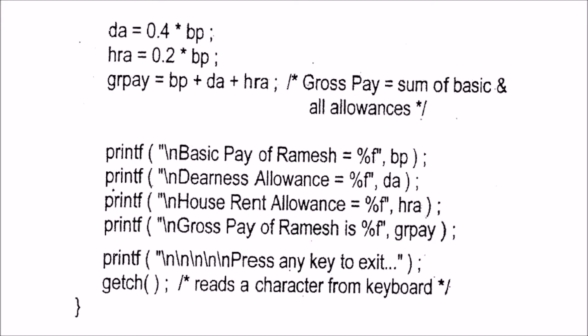The dearness allowance will be 40% of the basic salary, so DA = 0.4 * BP. Similarly, HRA will be 20% of BP, that is 0.2 * BP. The gross pay will then be BP plus DA plus HRA.